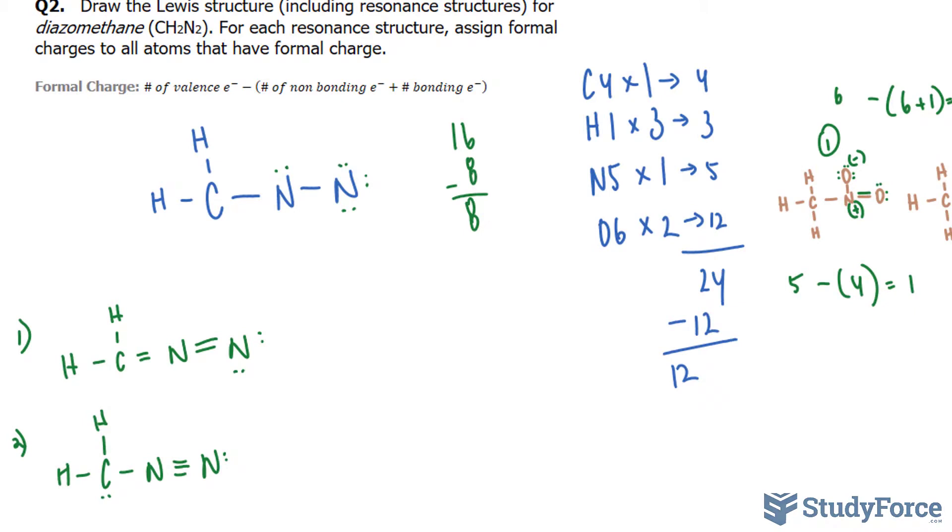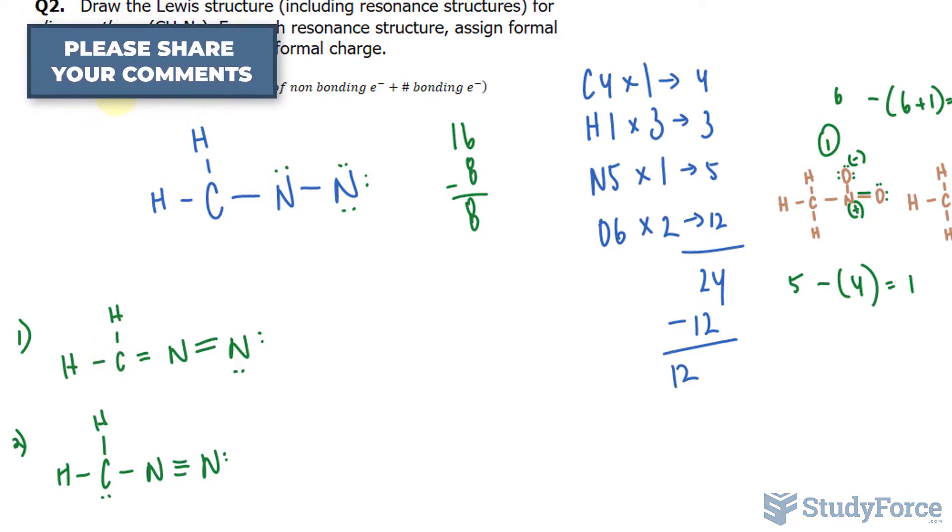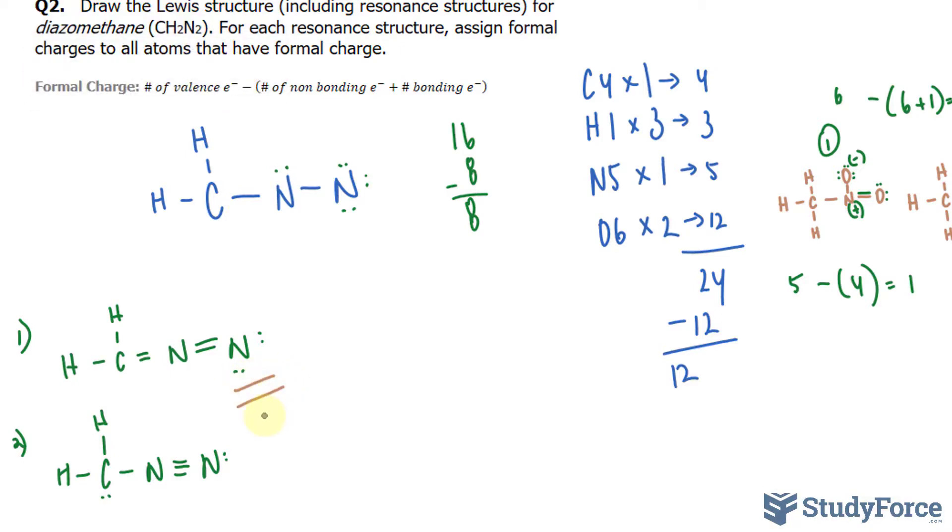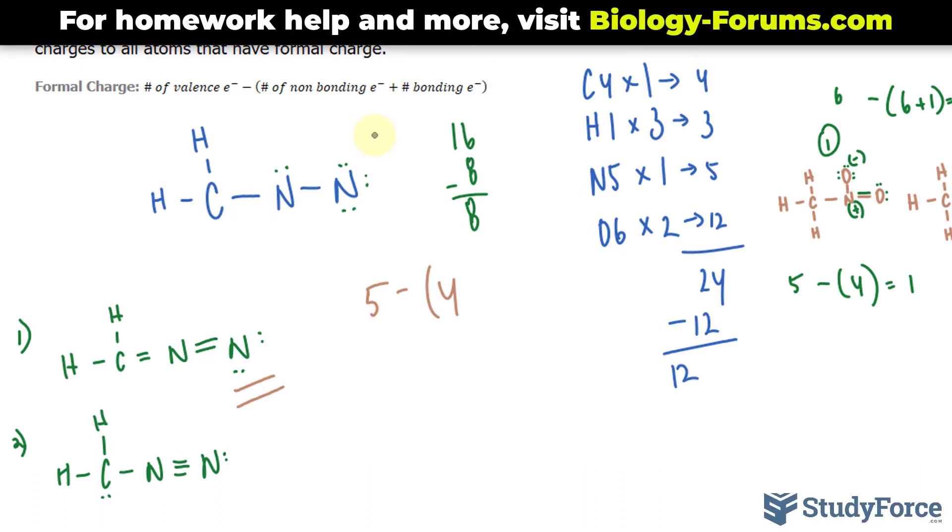Now we have to find the formal charge to determine which one is most likely to occur. Let's start with the first one. Using this formula for formal charge, we take the number of valence electrons for an atom. Let's take this one, for example. The valence electrons for nitrogen is 5. 5 minus the number of non-bonding electrons, so 1, 2, 3, 4,